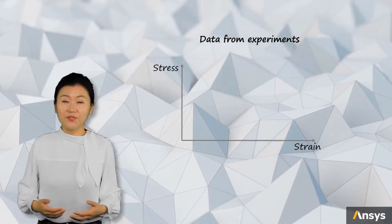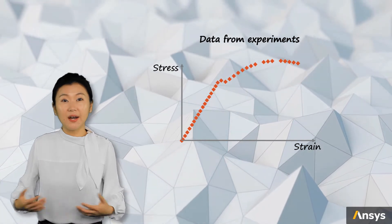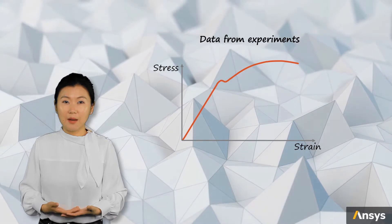Here, we will give you an example of using uniaxial tensile test data to define plasticity with bilinear hardening. So this is the stress-strain curve measured in the lab for the material.